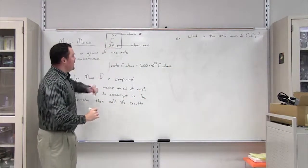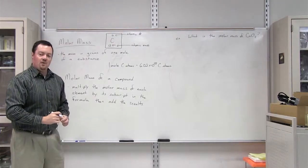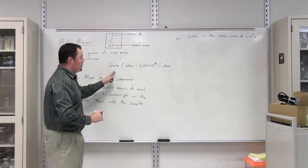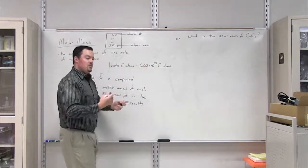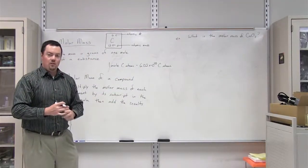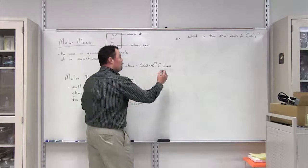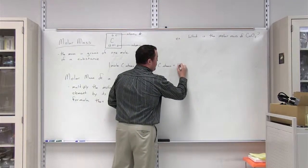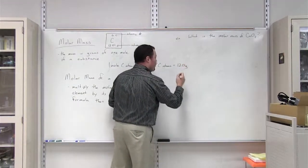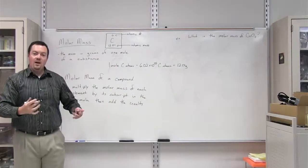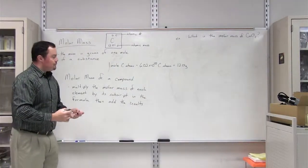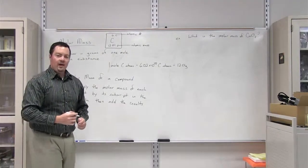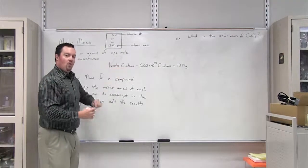By going to the periodic table and finding that the atomic mass of carbon is 12.01, we can also say that one mole of carbon atoms or 6.02 times 10 to the 23rd carbon atoms both are equal to 12.01 grams. So if you take carbon and weigh out 12.01 grams, then you know that you have one mole of carbon.